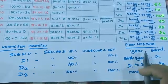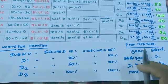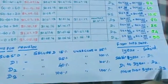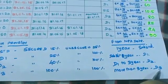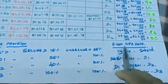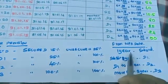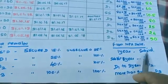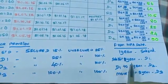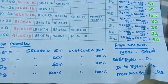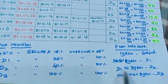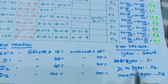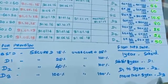According to RBI norms, the NPA accounts are classified into substandard account, D1, D2, and D3 accounts. From the NPA date, if it is within 1 year, then it is classified as substandard. Substandard to 1 year is D1 category, D1 to 3 years comes under D2, and more than 3 years comes under D3.